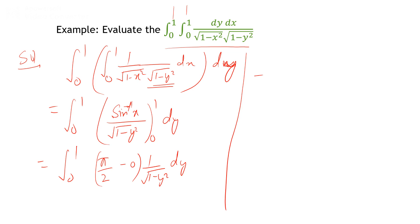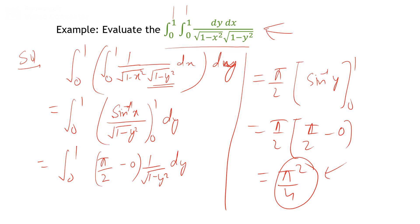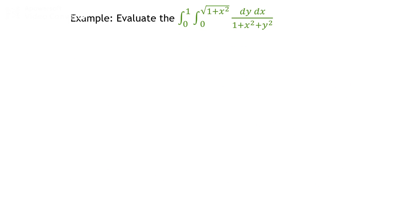Now integrating with respect to y: π/2 is a constant, and the integral of 1/√(1−y²) is sin⁻¹(y). Applying the limits 0 to 1 gives π/2, so the result is (π/2)(π/2) = π²/4. In the case of constant limits you can integrate first with respect to x then y, or vice versa, and you get the same result.